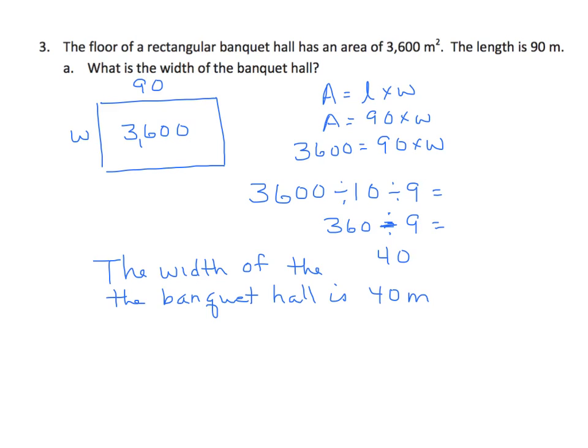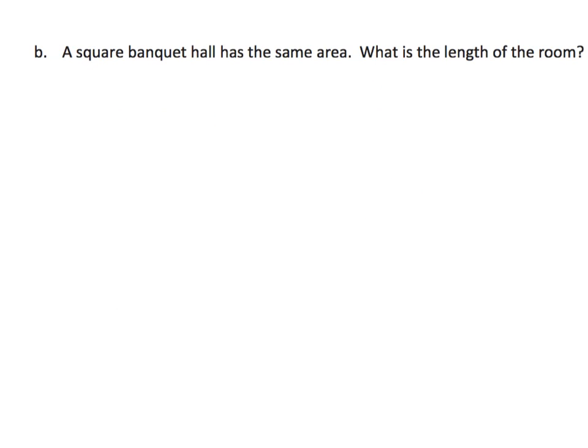We're going to use that number. We're going to go on to another problem and do the original area. So we have 3,600 again. It says it's a square. Well, what do we know about squares? The length and the width are equal. So I'm going to draw a square here. And I have to think of values. What can I multiply? What times what? Because the length and the width are the same.